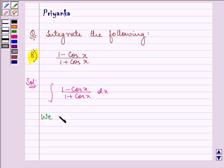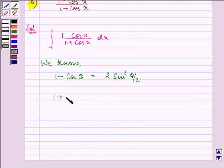Now, here we should know that 1 minus cos theta is equal to 2 sin square theta by 2 and 1 plus cos theta is equal to 2 cos square theta by 2. Right, so here the knowledge of these identities will be the key factor to this question.